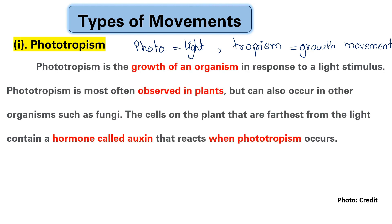Phototropism is the growth of an organism in response to a light stimulus. Phototropism is most often observed in plants, but can also occur in other organisms such as fungi. The cells on the side of plants that are away from the light contain a hormone called auxin.